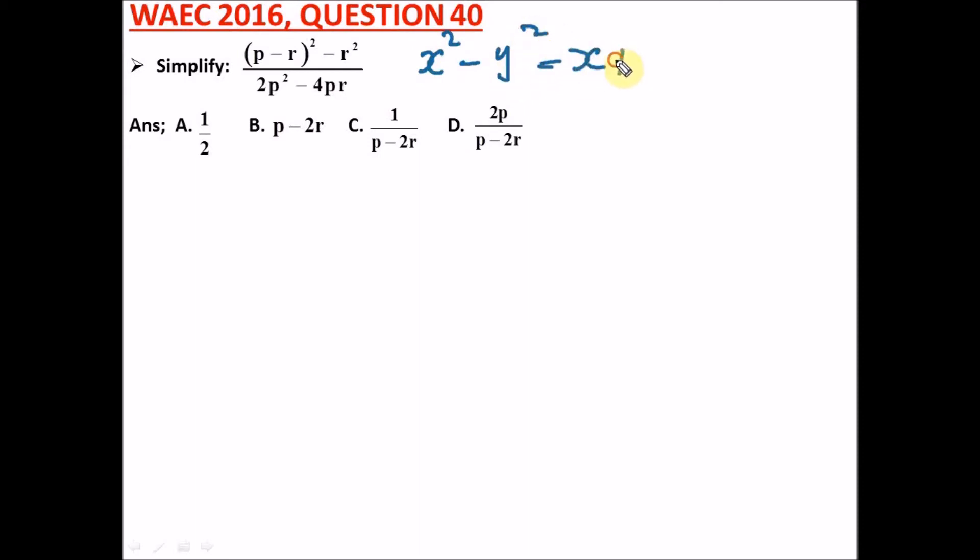So we're going to simplify the numerator. This is p minus r squared minus r squared. Let's convert it to this.